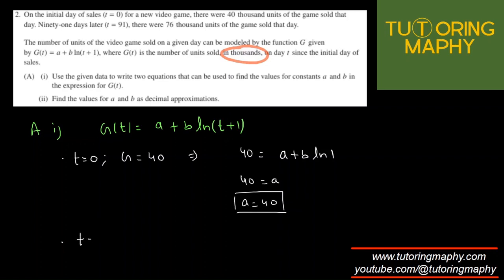The next equation is going to be that at T equal to 91, the value of G is 76, which means that 76 is equal to A plus B ln of 91 plus 1. 91 plus 1 is 92. So flip the omelette. So A plus B ln 92 is 76. That's equation 2. So that's the answer to part A and part 1.